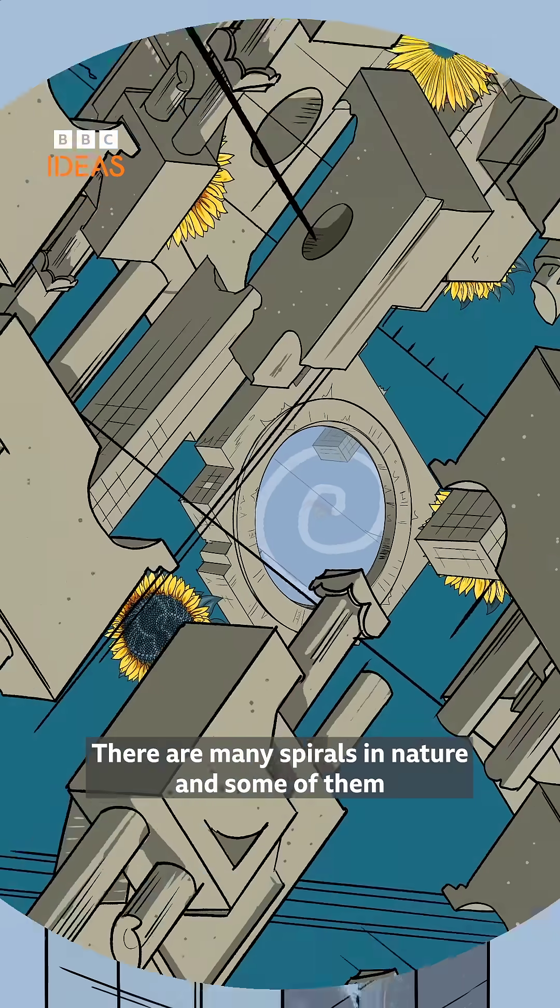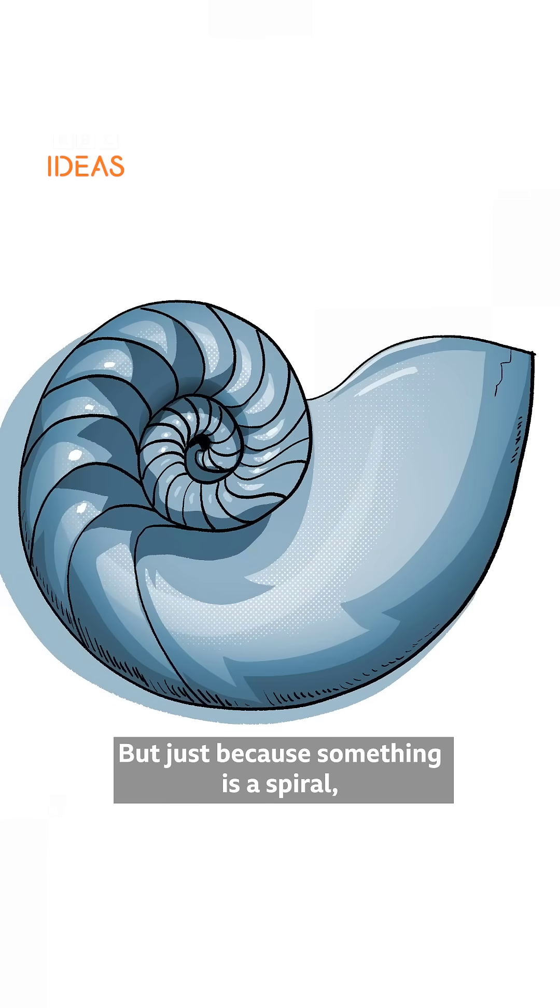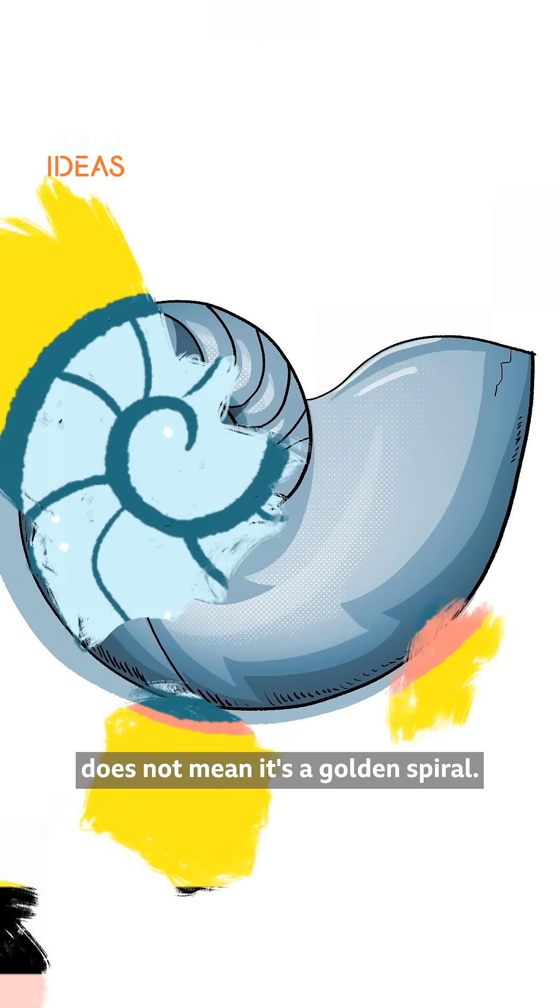There are many spirals in nature, and some of them are very mathematically interesting, but just because something is a spiral does not mean it's a golden spiral.